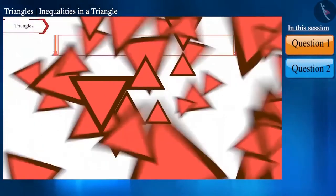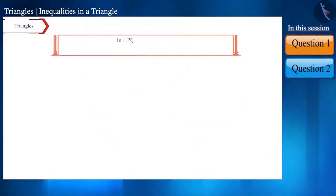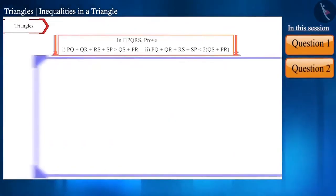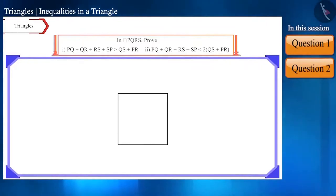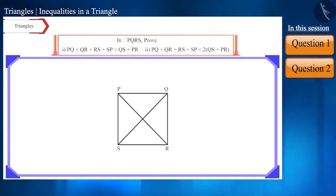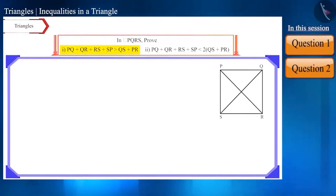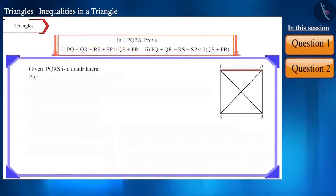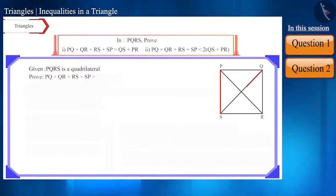Now let's take the next question: prove the following statements in quadrilateral PQRS. First, we will construct a quadrilateral and name it PQRS. Then we will join the diagonals QS and PR. We will solve the first part: prove that PQ + QR + RS + SP is greater than QS + PR.